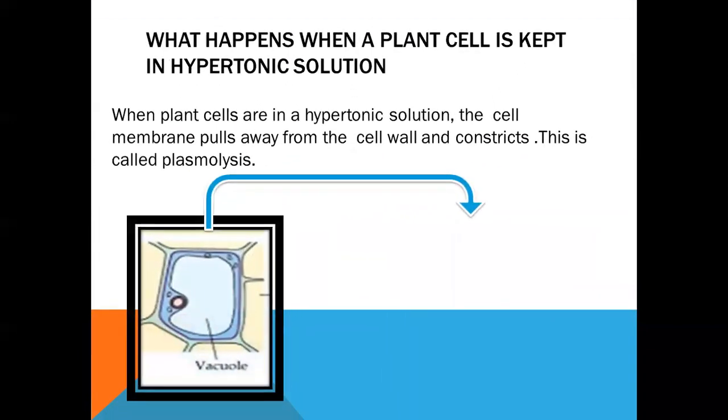But when a plant cell is kept in hypertonic solution, then what is going to happen? The cell membrane will shrink with the entire protoplasm content because water moves out of the cell. But the cell membrane is connected at certain places with the cell wall, and the cell wall is rigid, so this is not going to shrink. The cell is going to maintain the shape, and this stage is called plasmolysis.